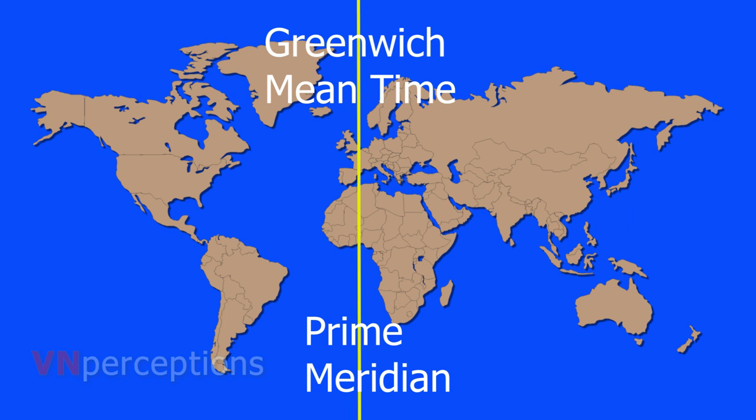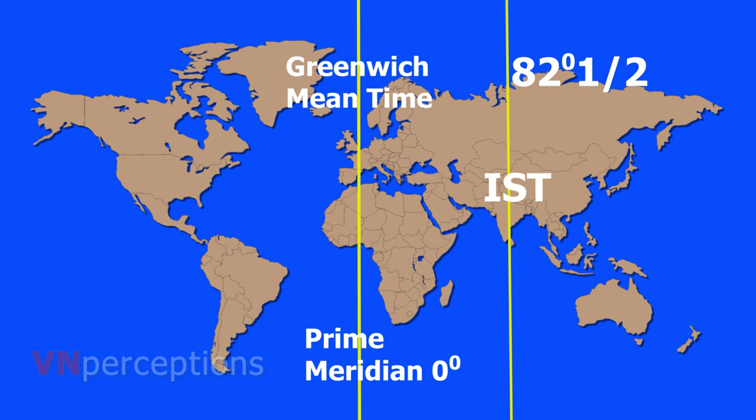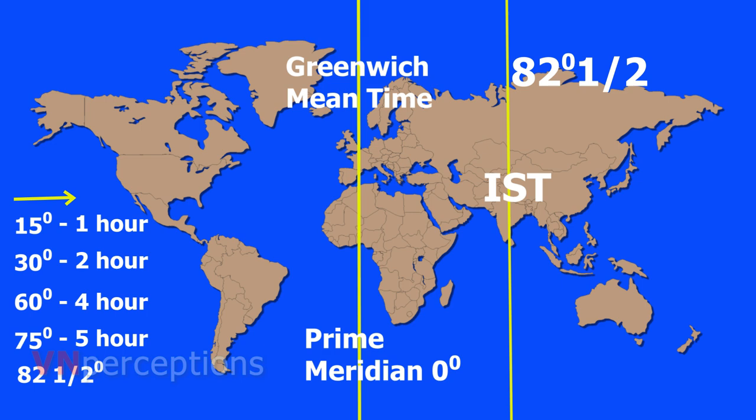From GMT, Indian IST is at 82 and a half degrees. That means there will be a time difference of 5 and a half hours. Because if we travel 15 degrees, time difference is 1 hour, 30 degrees is 2 hours, 60 degrees is 4 hours, 75 degrees is 5 hours, 82 and a half degrees, we are adding 7 and a half, so the time difference will be 5 and a half hours. If it is 12 noon at prime meridian, in India the time would be 5:30 pm.